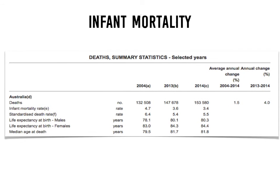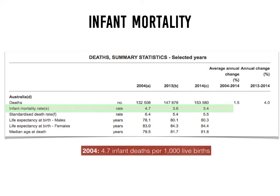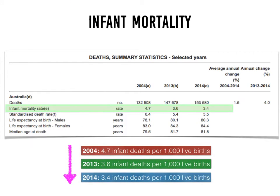Looking at this table, you can see that the infant mortality rate has come down quite significantly in a short space of time. Between 2004 and 2014 there is an incremental reduction in infant deaths per 1,000 live births — 4.7 in 2004, moving downward to 3.6 in 2013, and then in just one year a further reduction down to 3.4 infant deaths per 1,000 live births. You can see that health outcomes for infants are improving over time.